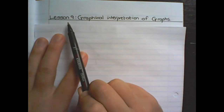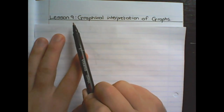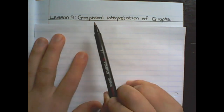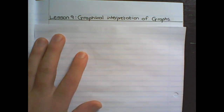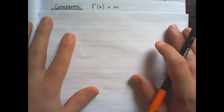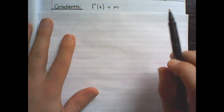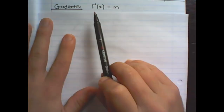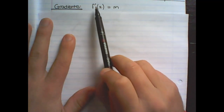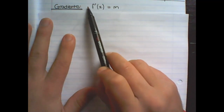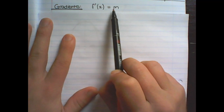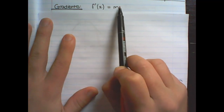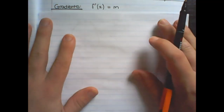This is Lesson 9 of Calculus and today we are covering graphical interpretations of graphs. Let us start by discussing gradients. Up until now we have learned that the derivative of a function f(x) is a representation of the gradient at any point of x.